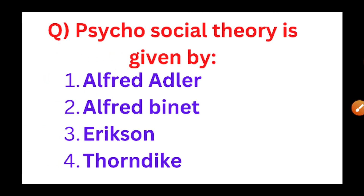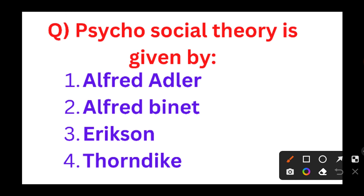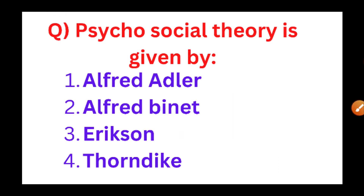The next question: Psychosocial theory is given by. The options are Alfred Adler, Alfred Binet, Erickson, and Thorndike. The psychosocial theory is given by Erickson, which is also very important.